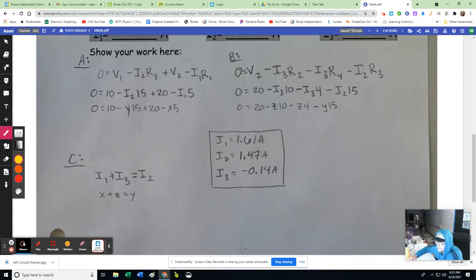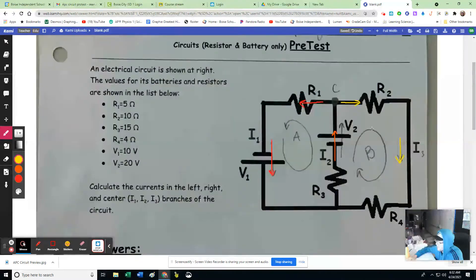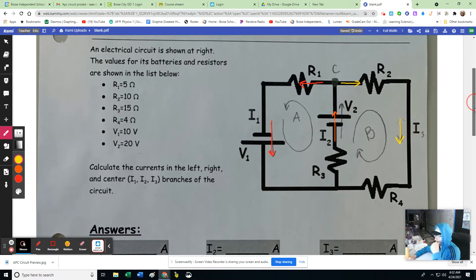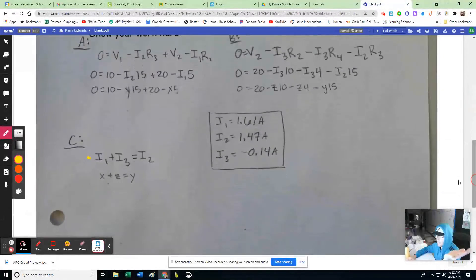And so I go ahead and write up that equation right here. Current out is equal to current in. So I have I2 flowing in. That must be equal to I3 and I1 flowing out. Okay. So there's one relationship. Now I have three unknowns. I don't know any of those currents.